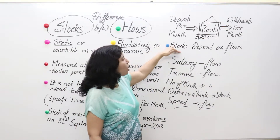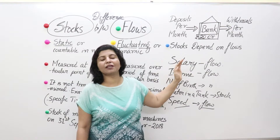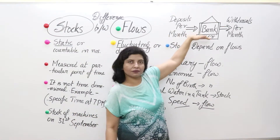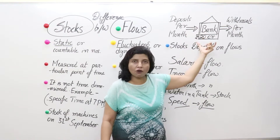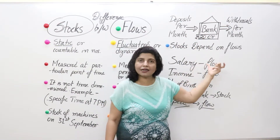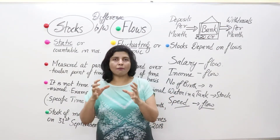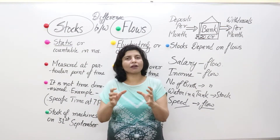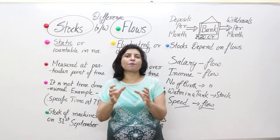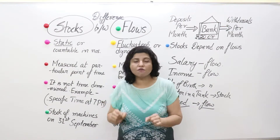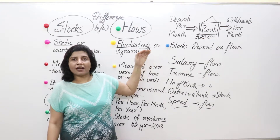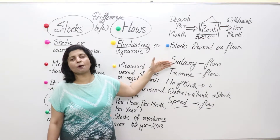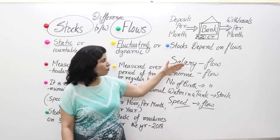An important point: stocks depend on flows. Greater the flow, greater will be your stock. If we keep depositing larger and larger amounts of money per month in your bank account, there will be a larger stock of that amount. So to summarize: stock is any amount of unsold output or commodity left with a producer or seller, measured at any particular point of time. Flow is the quantity of anything measured over a period of time — per month, per day, per week, or per year basis.